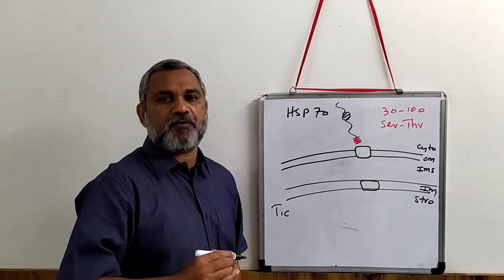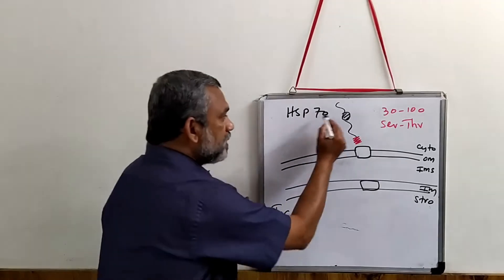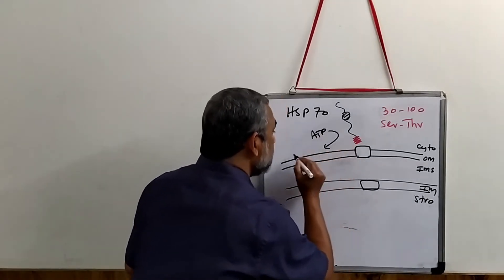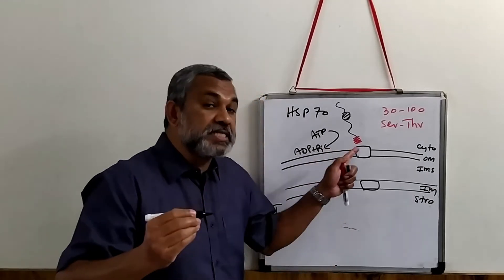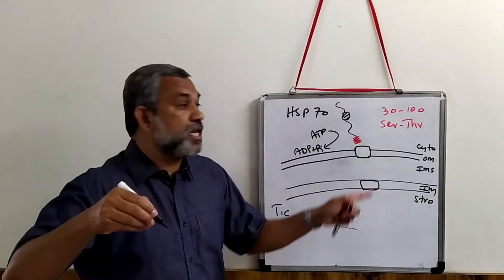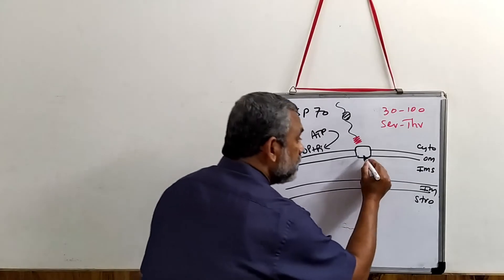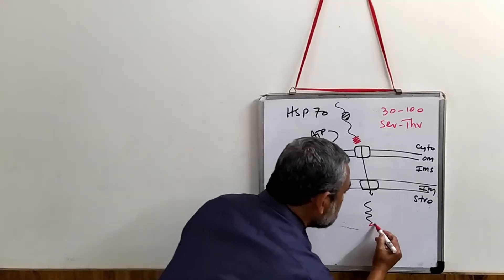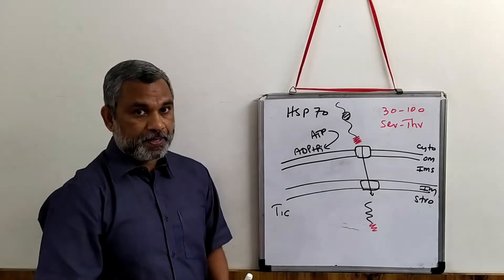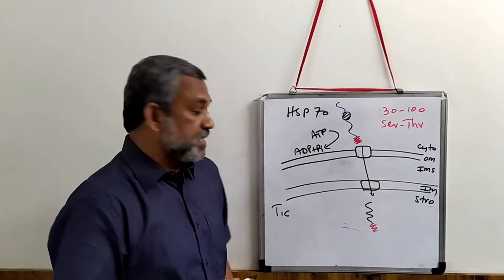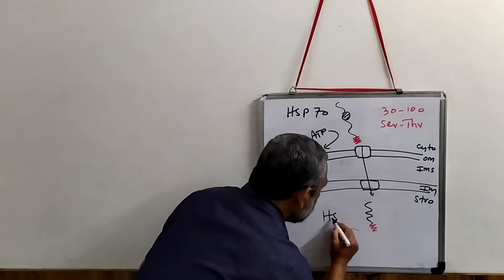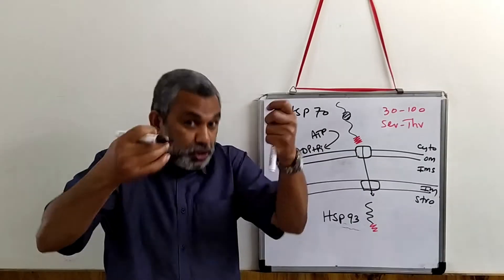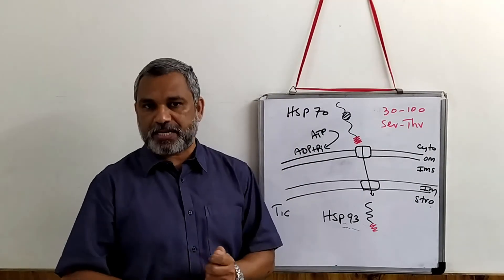What normally happens during translocation is that HSP70 keeps the protein unfolded. Energy is provided by ATP hydrolysis, driving the protein through the TOC and TIC and into the stroma. The protein along with its signal is also pulled inside with the help of another chaperone, HSP93. HSP93 is literally pulling the protein inside towards the stromal side.